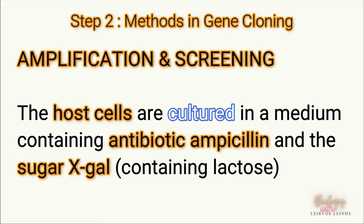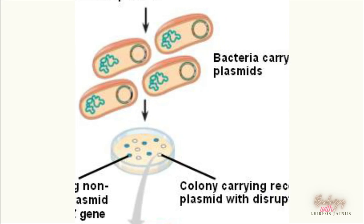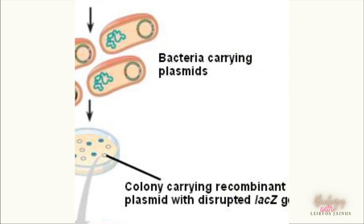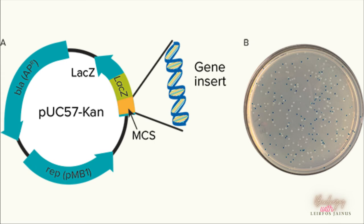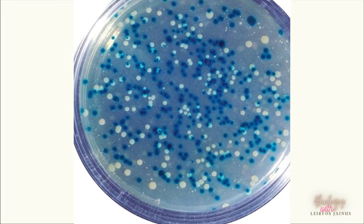During amplification, the bacteria are allowed to reproduce in a culture medium containing the antibiotic ampicillin and lactose. Ampicillin will kill all bacteria without a plasmid. Bacteria with a plasmid will survive to form white or blue colonies. In blue-white screening, bacteria with the recombinant plasmid will form white colonies, while bacteria without the recombinant plasmid will form blue colonies.